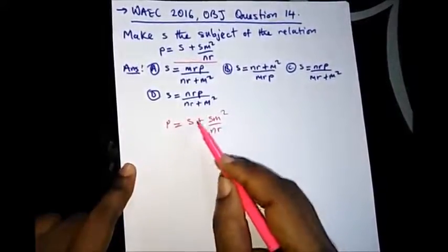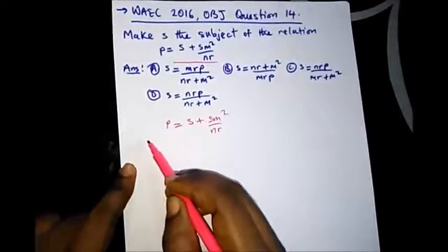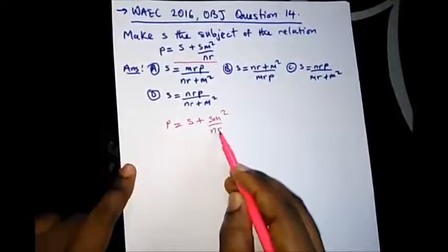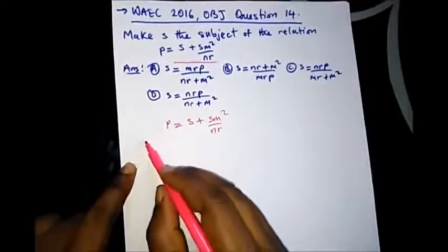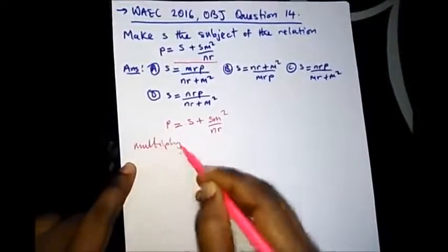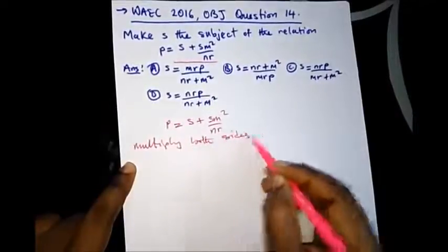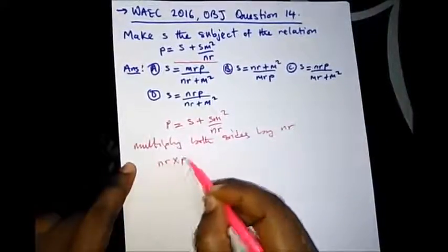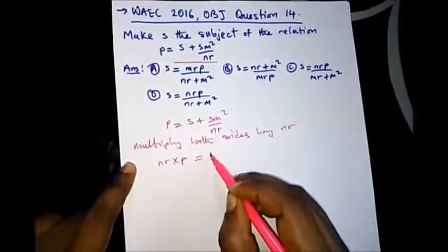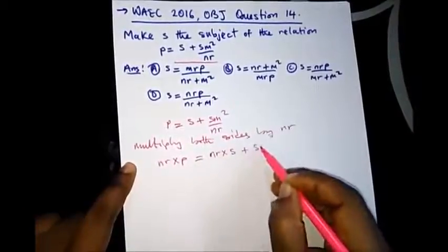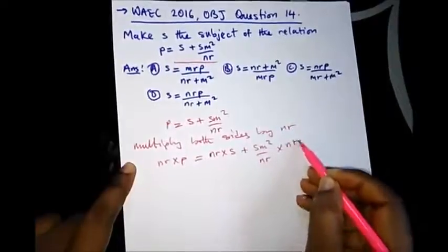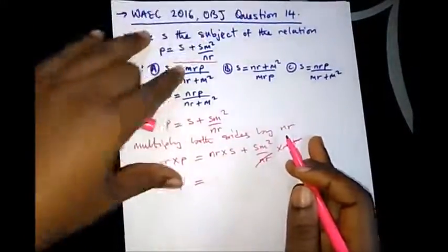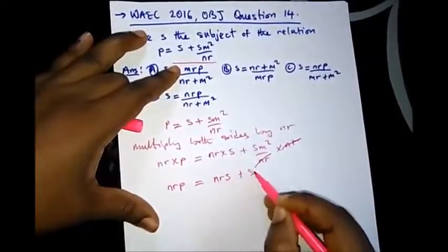So from here, let's cancel NR from the denominator. We multiply every value on both sides by NR. This gives us NR multiplied by P equal to NR multiplied by S plus SM squared over NR, multiplied by NR. This NR will cancel this NR, so we are left with NRP equal to NRS plus SM squared.